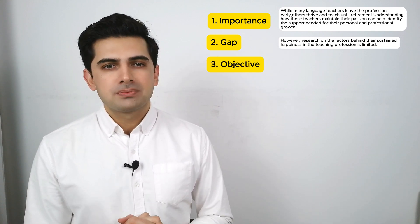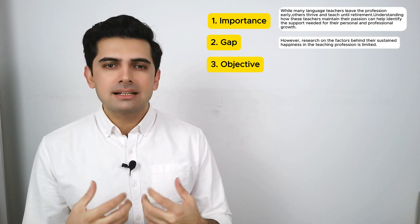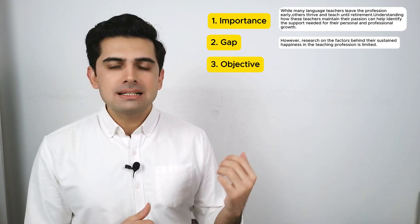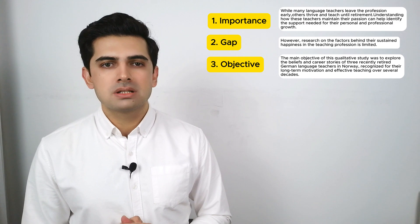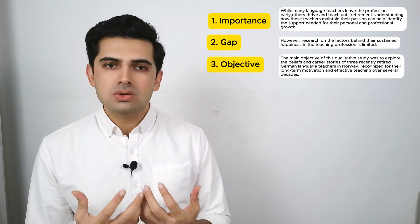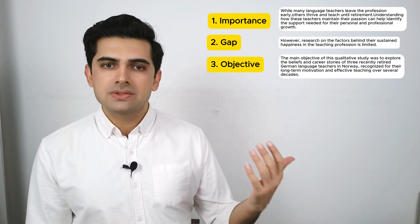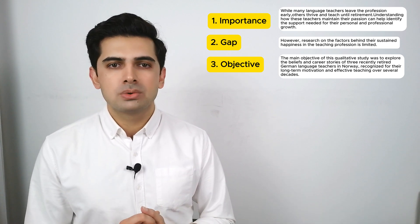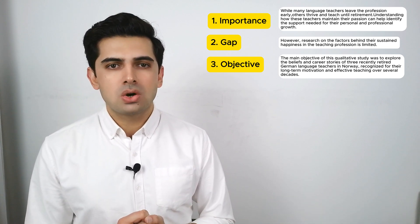Number three, objective — what exactly you want to do in this study. So if we look at this example, here the author mentioned that they want to study three cases of such teachers who went until as far as retirement and want to determine what are the factors that motivate them to be in this job.